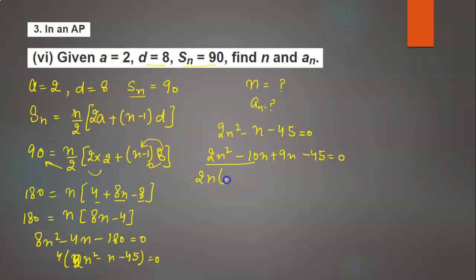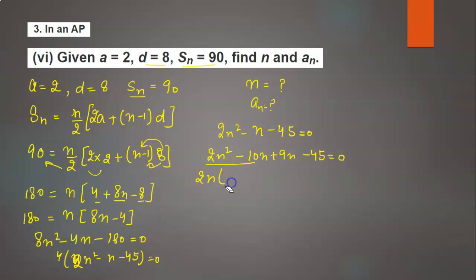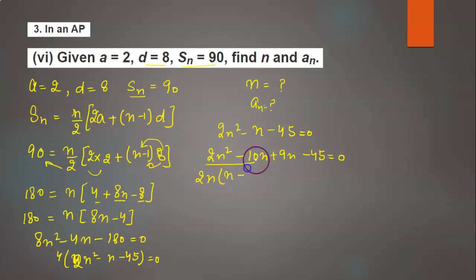Now take common 2n. So we will get 2n times (n minus 5). Here 9 is common, so (n minus 5) is in the bracket.